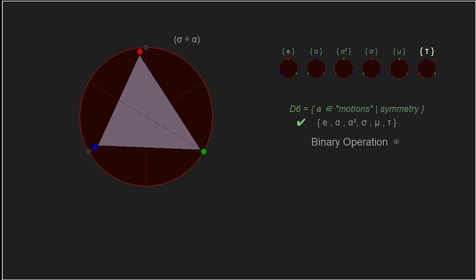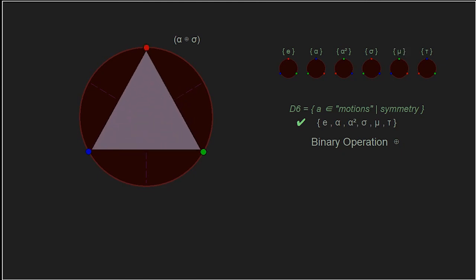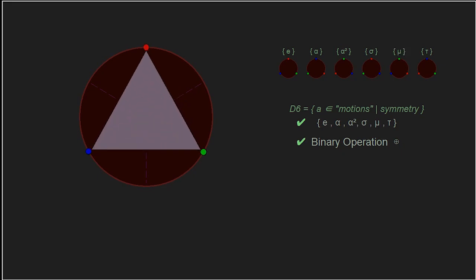Now let's see what we get if we reverse the order: sigma — the reflection about the 90-degree axis — followed by alpha, the rotation of 120 degrees. Since this group is non-commutative or non-abelian, order matters. The resultant position of the triangle is now mu, and doing another mu puts us back to the original identity. So we have our binary operation: the composition of functions, or adding the elements.